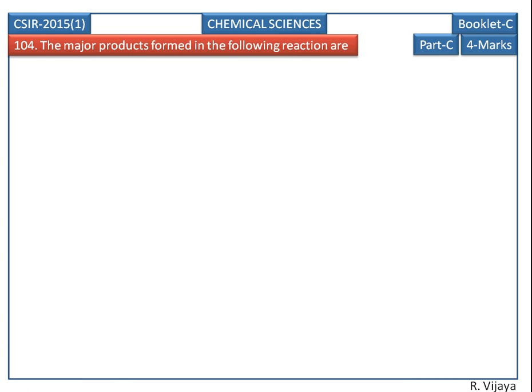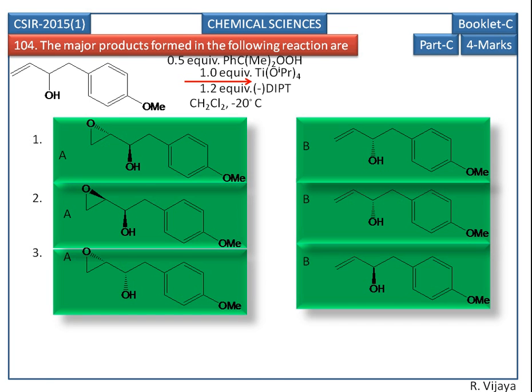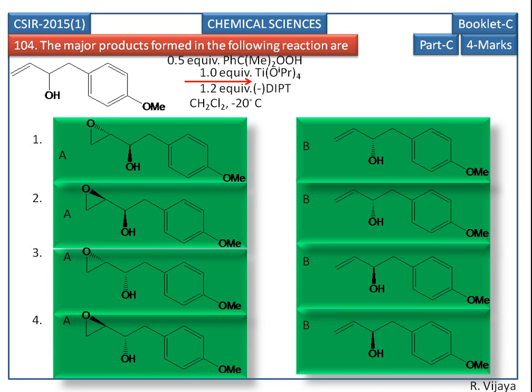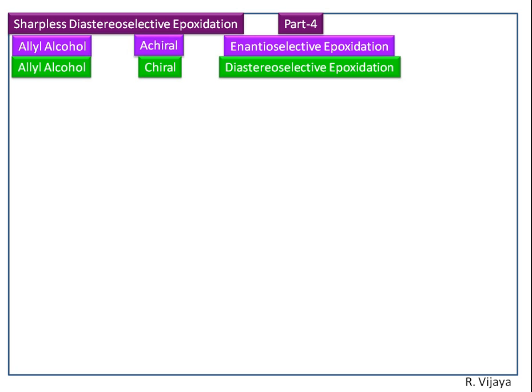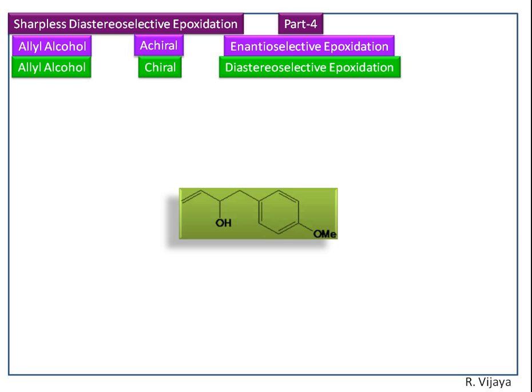The major products formed in the following reaction are — the options are shown here. Before going to see the correct answer, first we see what is Sharpless diastereoselective epoxidation. An achiral allylic alcohol undergoes enantioselective epoxidation, whereas a chiral allylic alcohol undergoes diastereoselective epoxidation. Let us consider the given reactant molecule which is given in the question itself.